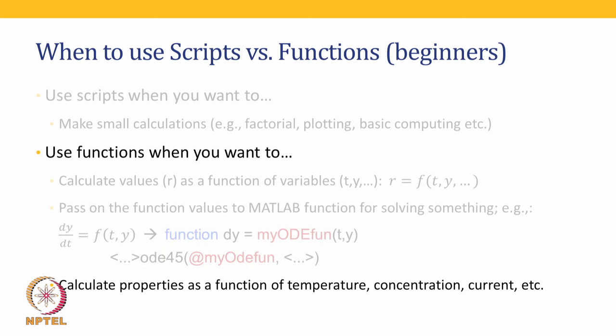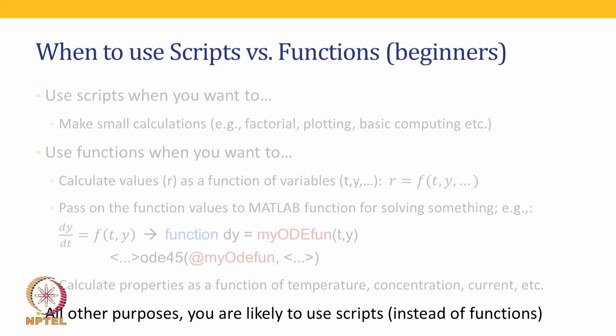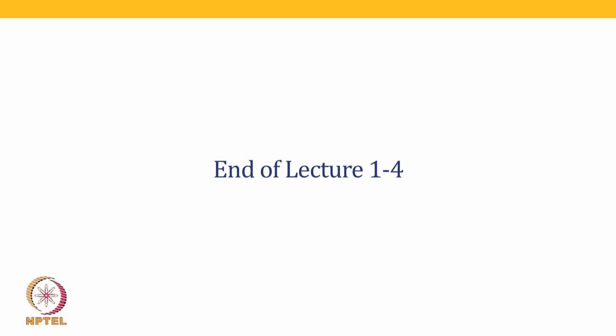A third example of when to use functions: when you want to calculate a property as a function of some variable — for example, saturation pressure of steam at various temperatures, diffusivity as a function of concentration, or something as a function of voltage and current. These properties, which depend on temperature, concentration, current, and so on, are best computed using functions. For all other purposes, you are more likely to use scripts.